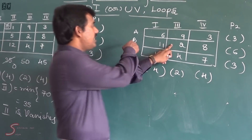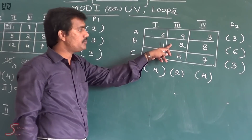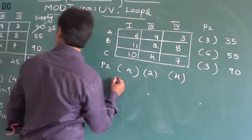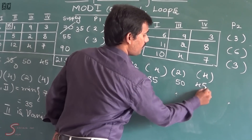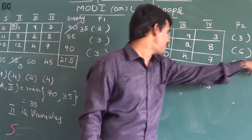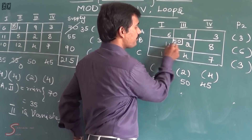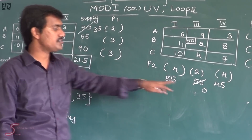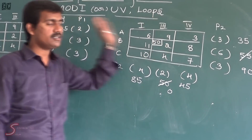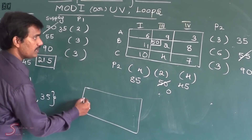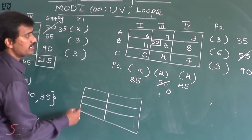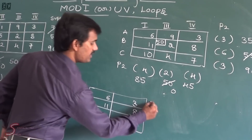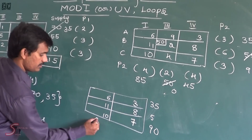We allocate to cell B,3. Supply and demand values are 35, 55, 90 and 85, 50, 45. The minimum of 55 and 50 is 50, so we allocate 50 here. Balance becomes 5 and demand becomes 0, so market 3 column vanishes. Remaining table has values 6, 3, 11, 8, 10, 7 with supply 35, 5, 90 and demand 85, 40.